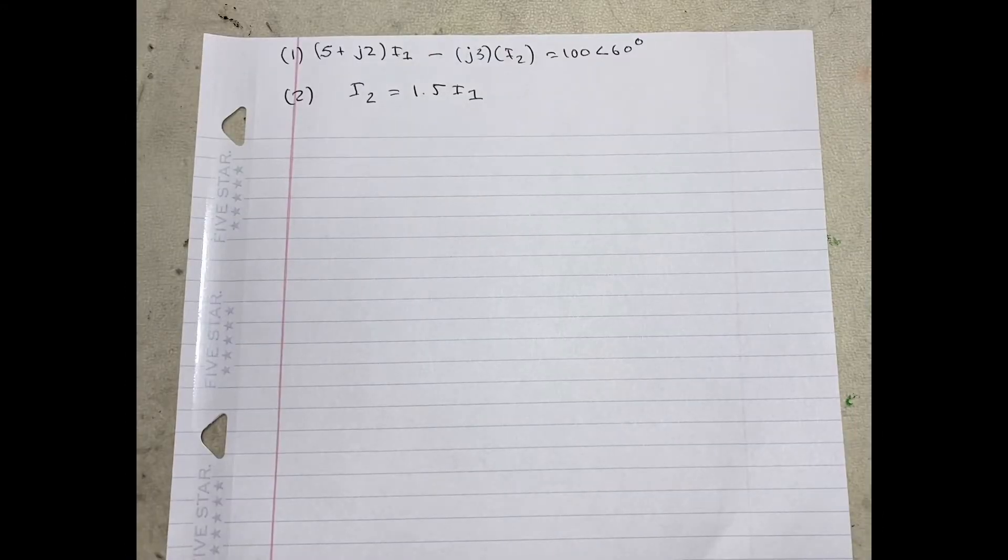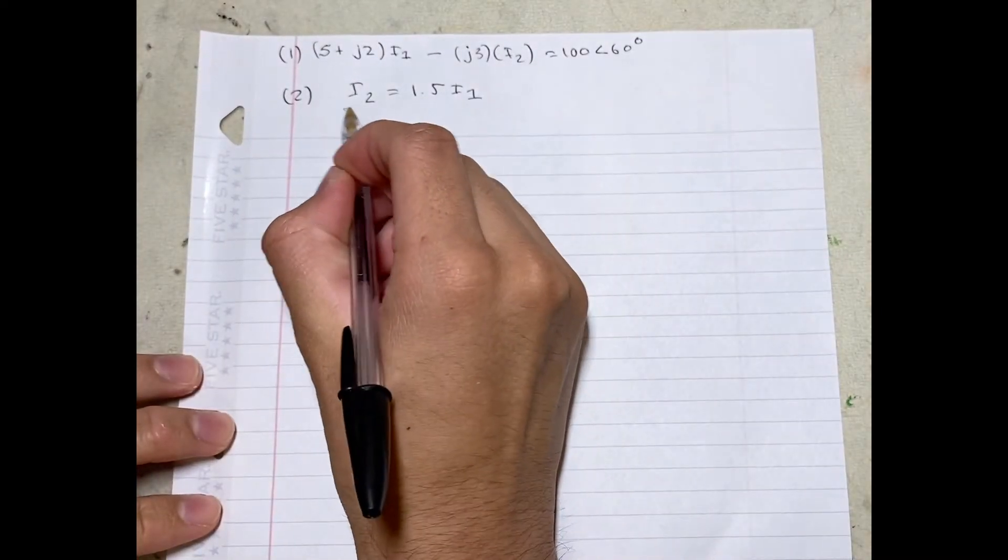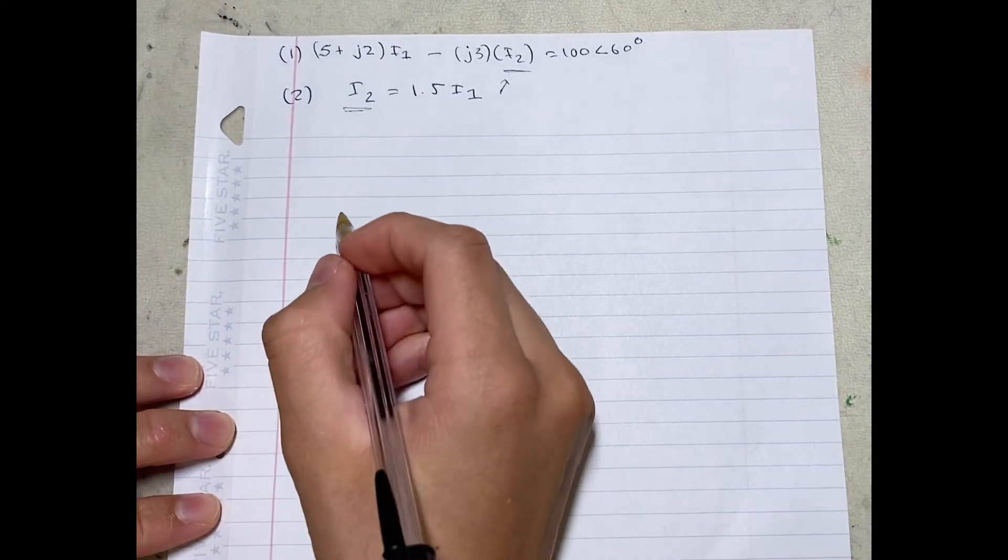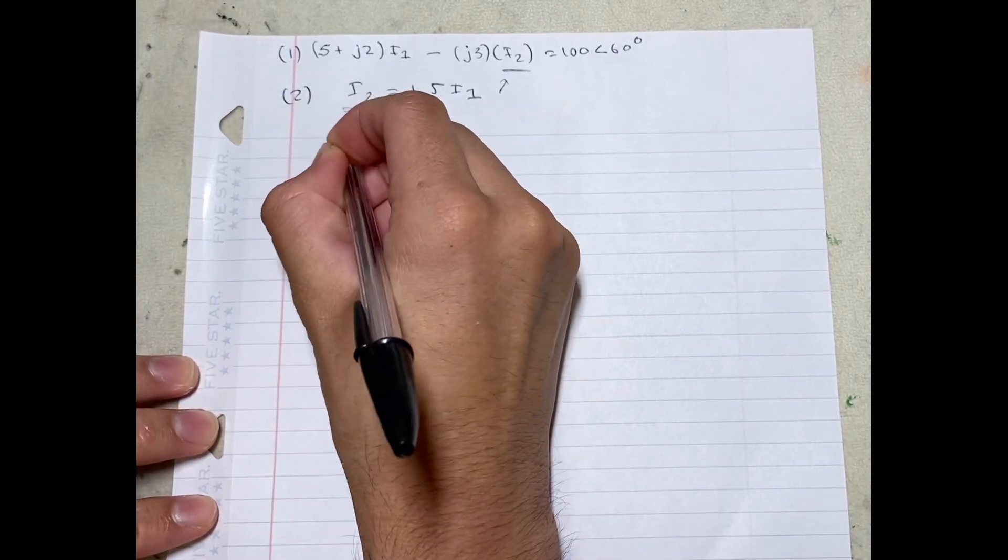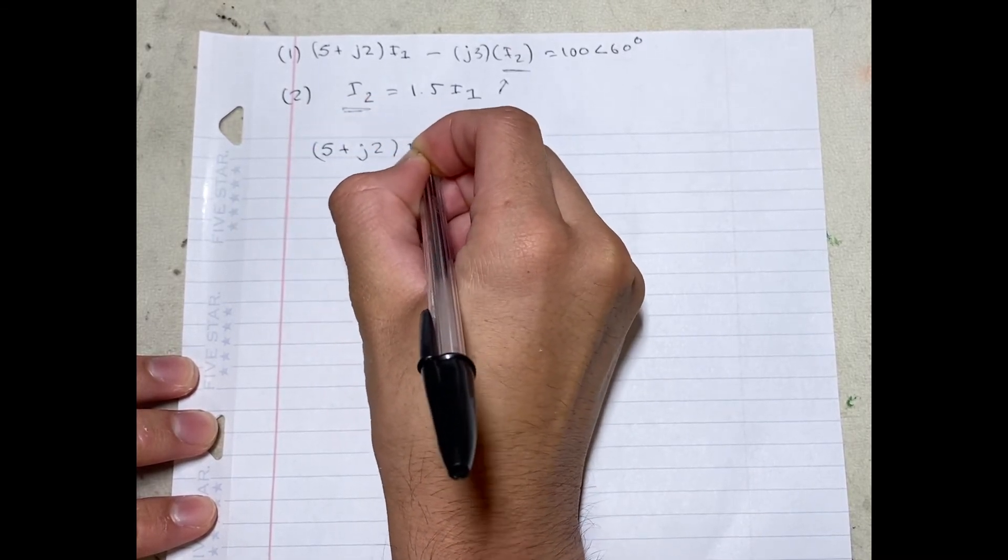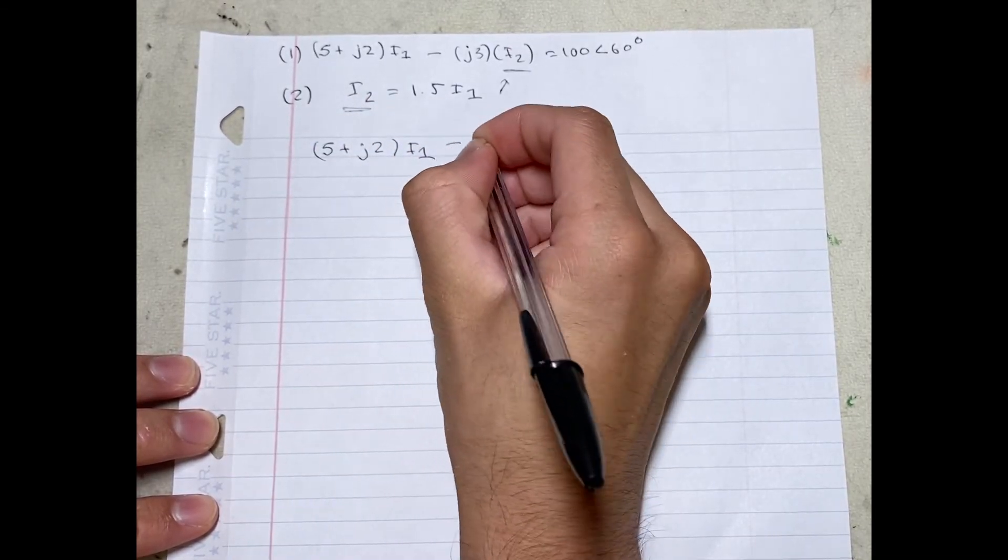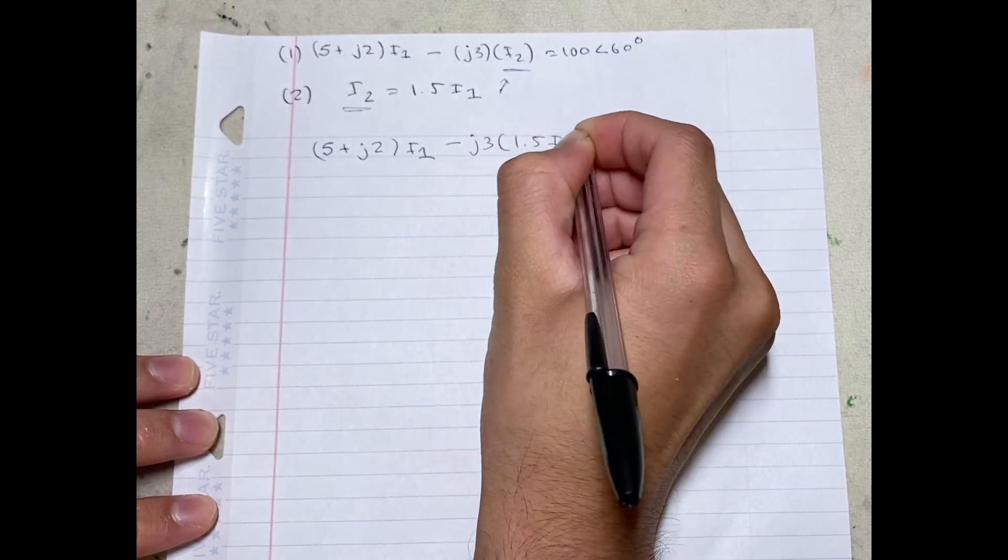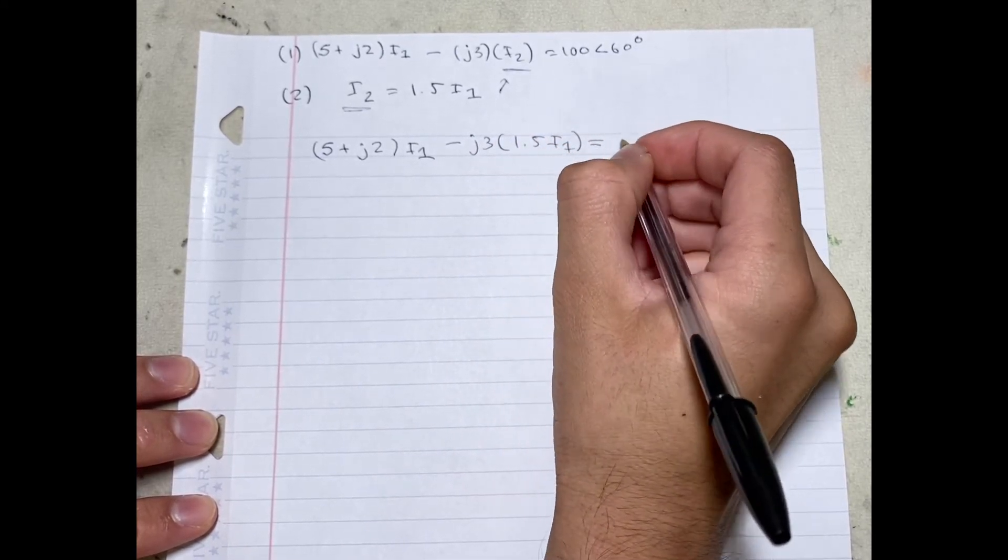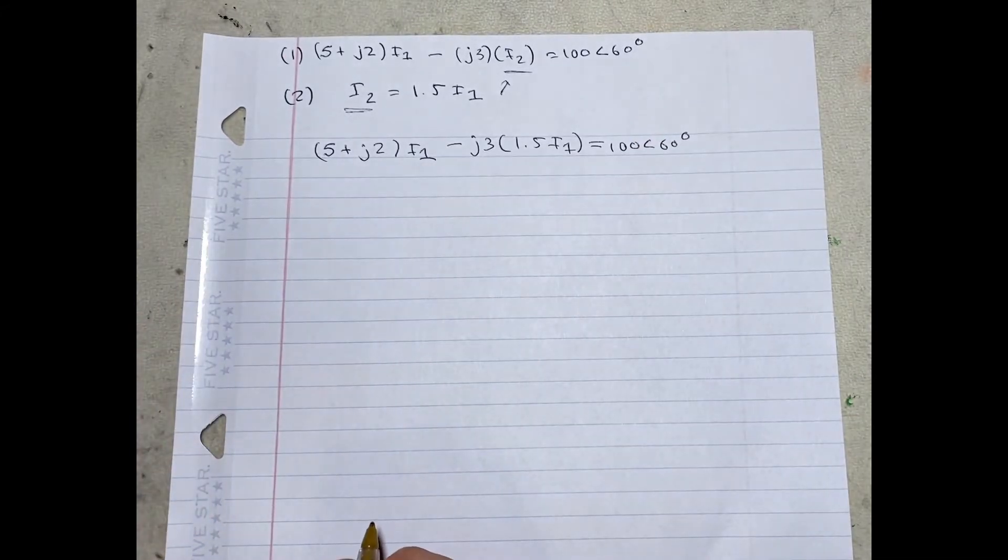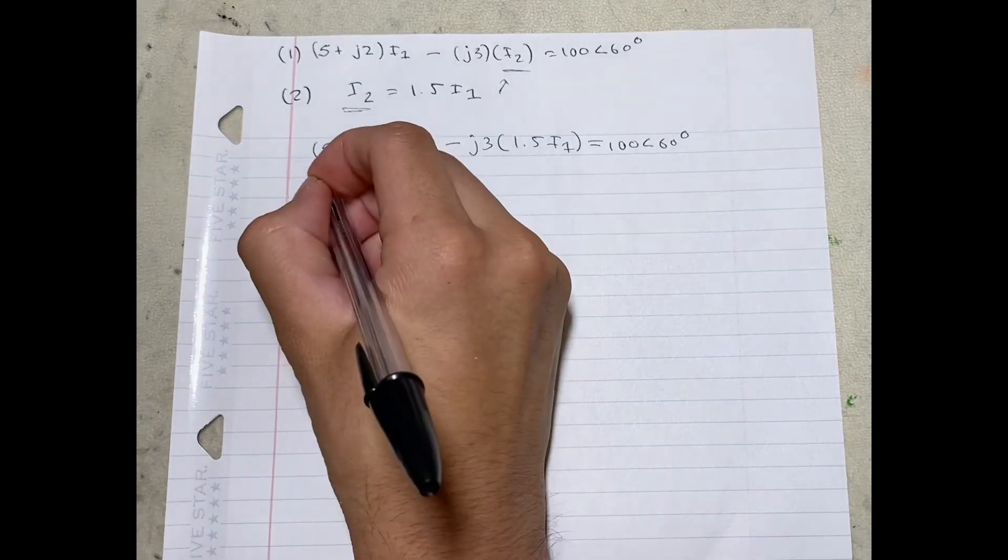I've now rewritten the two equations for you to see. As you can see here, we have two equations and two unknowns. I'm going to substitute the I2 equation into the first equation. So we're going to get 5 plus J2 times I1 minus J3 times 1.5 I1 is equal to 100 angle 60 degrees.